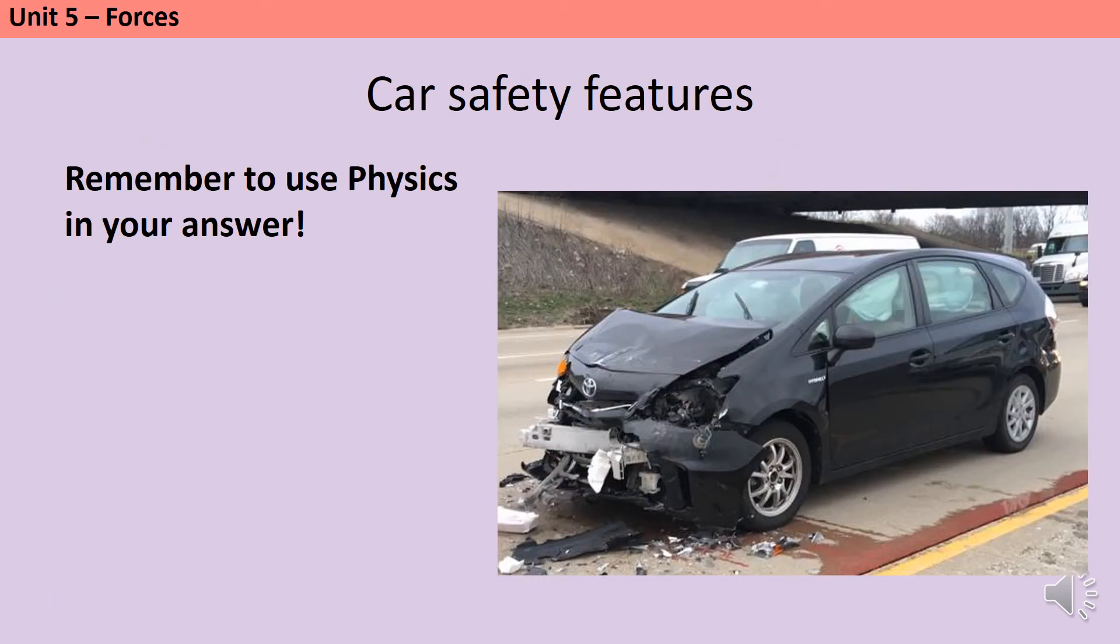We're now going to look at three safety features that modern cars include in order to make you safer in the event of a car crash. We could use the same physics to describe how cycle helmets or gym crash mats keep you safe. The important thing to remember here is that you must describe these in terms of momentum. You won't get the marks in an exam for saying that a seat belt keeps you safe because it stops you going through the windscreen, or saying that airbags keep you safer because they're soft. You need to be talking about momentum.